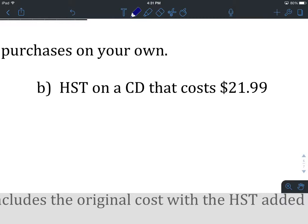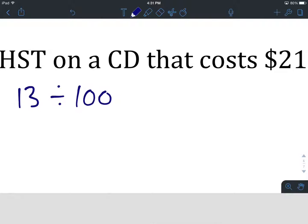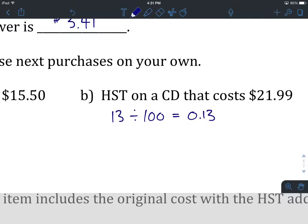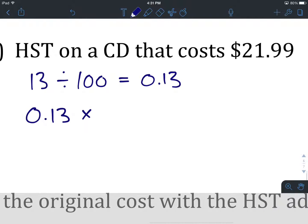All right, you're back. Let's start by converting our HST percentage into a decimal. We have 13 divided by 100 will give us 0.13. If that step is starting to be repetitive, you can just do it really quickly, even without using your calculator. Step number two is to take that decimal, 0.13, and multiply it by whatever the cost of the item is. In this question, we're talking about a CD that costs $21.99, and that's what we type into our calculator. 0.13 times $21.99, and that's going to give us 2.8587.